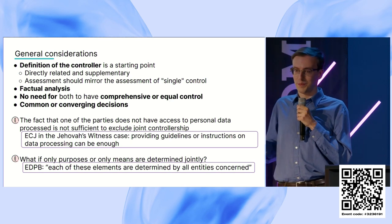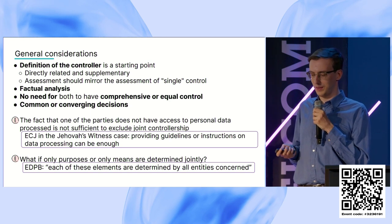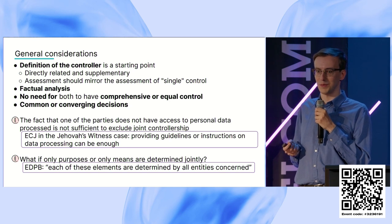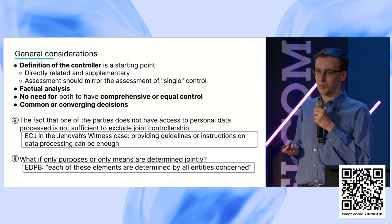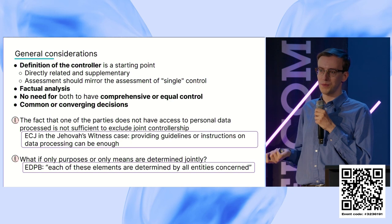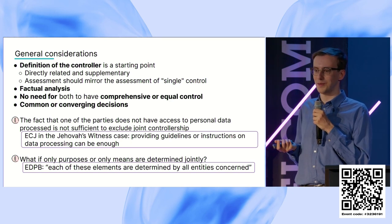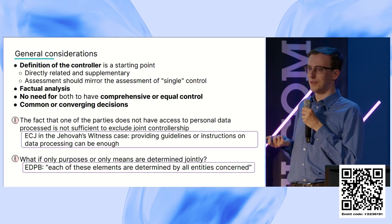Not all parties need to have access to the data for it to be a joint controllership. But both must decide, to some extent, on the purposes and means. If only one of them is deciding on purposes and means, then it wouldn't be a joint controllership — though that's a very theoretical case.